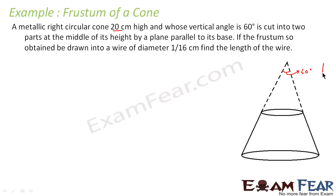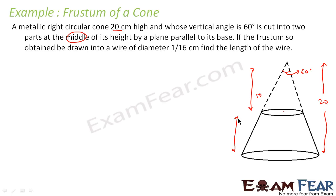The total height of the cone is 20 centimeters and the vertical angle is 60 degrees. It is cut into two parts at the middle, so this height is 10 and this height is also 10. The cut is made by a horizontal plane parallel to the base, and the frustum obtained is converted into a wire of diameter 1/16 centimeter. We have to find the length of the wire.